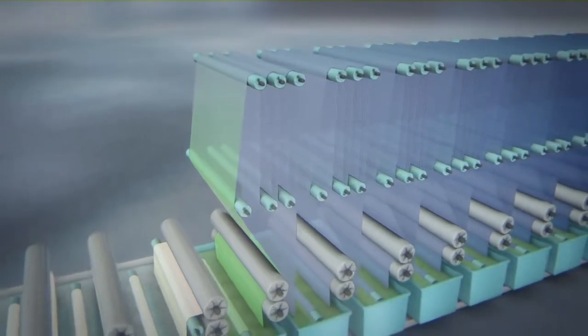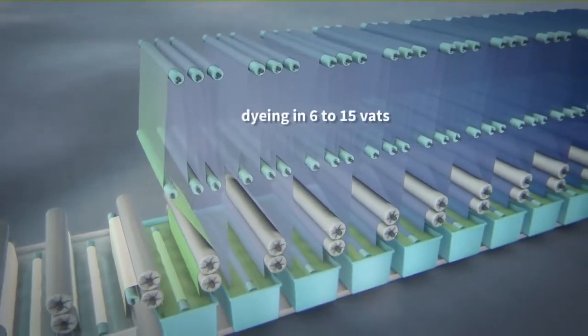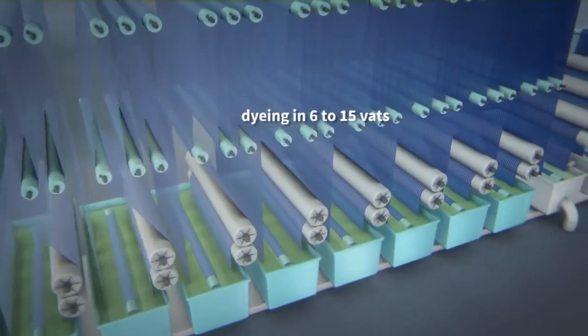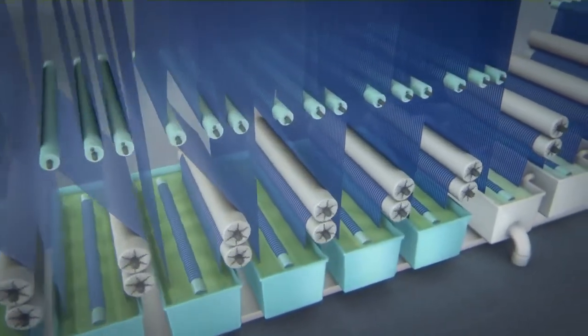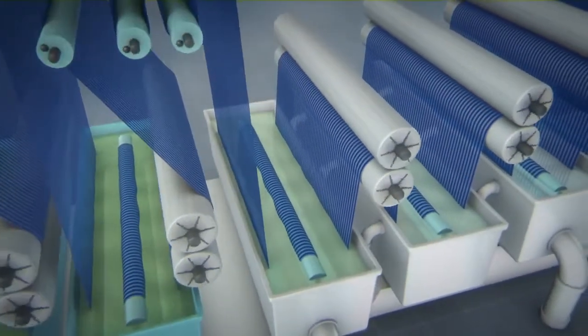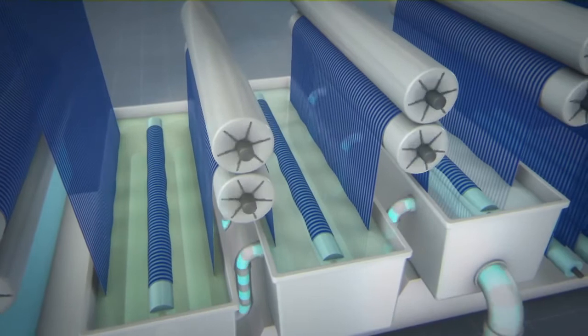For intensive and uniform dyeing, the cotton has to pass through 6 to 15 consecutive dyeing vats, because the fiber absorbs the indigo only very slowly. This process not only consumes vast amounts of energy, but also, and above all, large quantities of water.